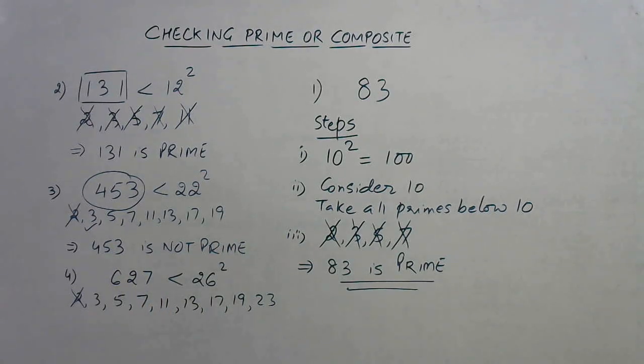Okay, now let's check the divisibility. By 2, obviously this is an odd number, so 2 ruled out. 6 plus 2, 8, 8 plus 7, 15. So this is divisible by 3 again. Therefore, 627 is not prime.